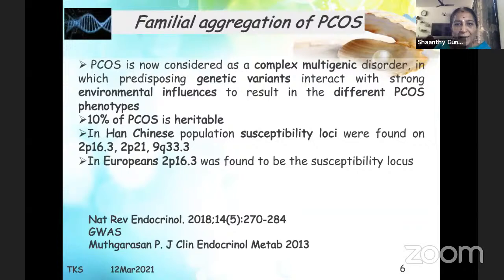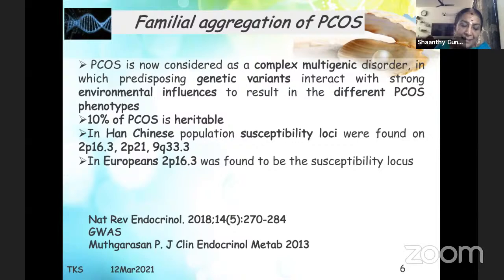PCOS is a complex multigenic disorder in which predisposing genetic variants interact with strong environmental influences to result in different PCOS phenotypes. Ten percent of PCOS is said to be heritable. In Han Chinese populations, susceptibility loci were found on 2p16.3, 2p21, and 9q33.3, but in Europeans, 2p16.3 was found to be the susceptibility locus. If a mother has PCOS, there is a 20 percent chance the daughter may develop PCOS; if a sister has PCOS, there is a 40 percent chance.